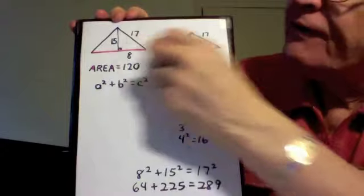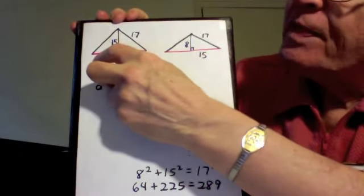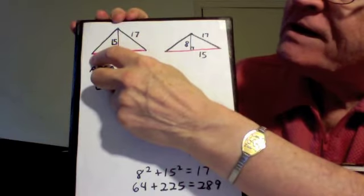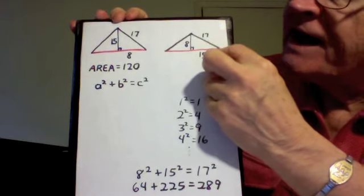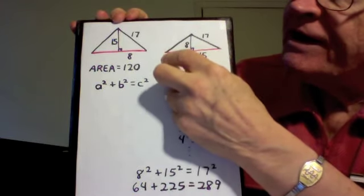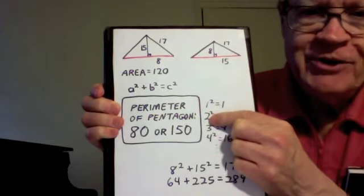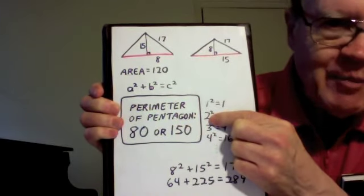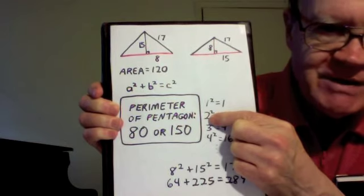I asked for the perimeter of the Pentagon. It takes 5 of these to make that perimeter. So, in this case, the perimeter is 16 times 5, which is 80. In this case, the perimeter is 30 times 5, which is 150. And so there are two solutions. The perimeter of the Pentagon can be either 80 units or 150 units. And that is my solution to my Pentagon and Triangles Challenge. Thank you for watching this solution video.